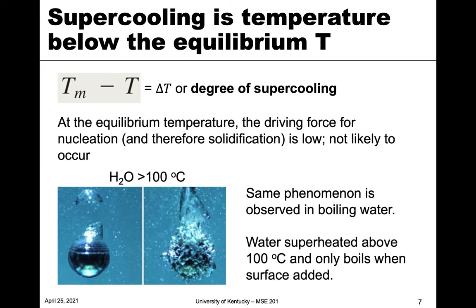What we call supercooling is a measure of that concept. Supercooling is the temperature below the equilibrium freezing or melting temperature. It's basically the melting temperature minus the temperature below that we're at — the delta T for difference in temperature. We call that the degree of supercooling: how far away from Tm are we.